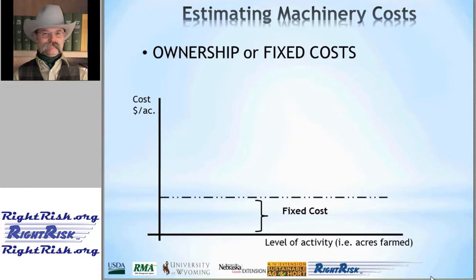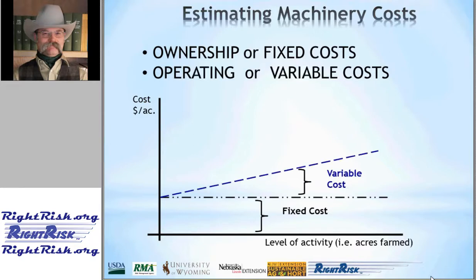What we're really doing with this software is estimating the cost for various machine resources. Those costs can be grouped into two broad categories. There are ownership or fixed costs, which do not vary with level of activity — whether we look at acres farmed or hours used — and are considered constant over the life of the machine. The second group is operating or variable costs, which we typically expect to increase as use of the machine increases.